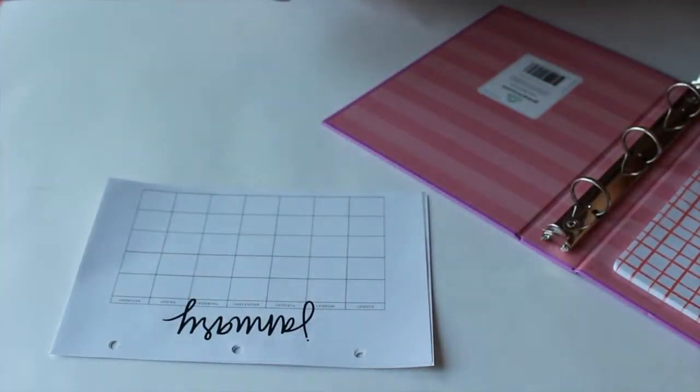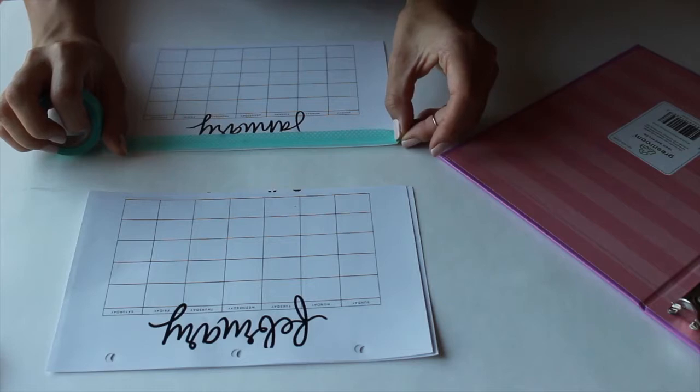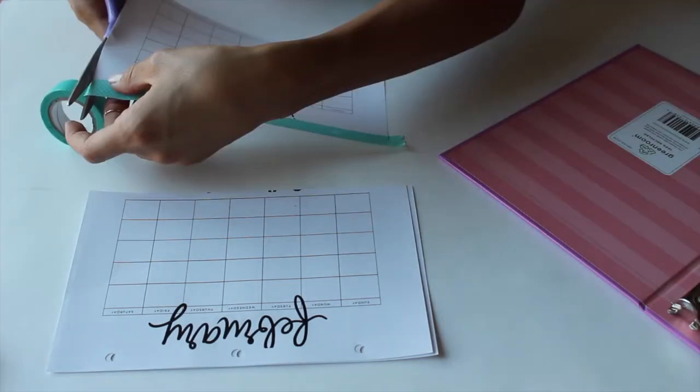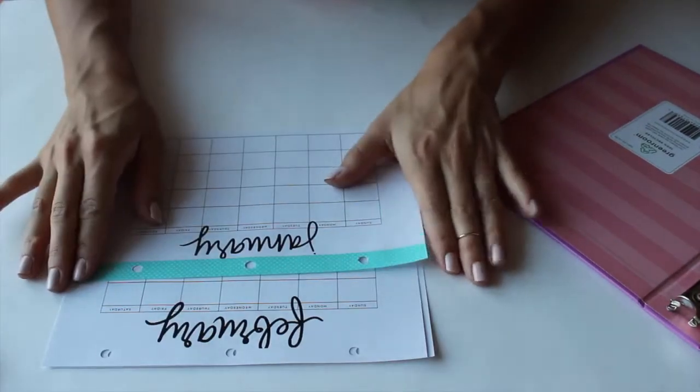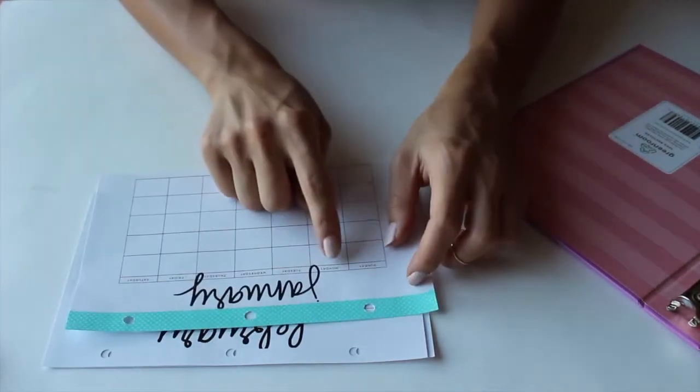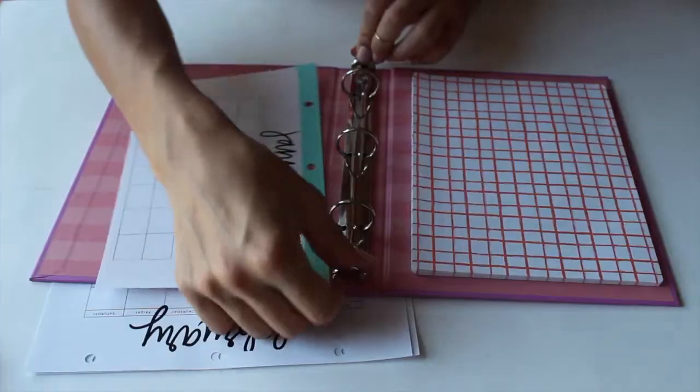To reinforce it so that when I'm flipping back and forth between the monthly pages, I put some washi tape. I thought not only does this reinforce it, but it makes it super cute. So I just did different color washi tapes on all of the pages.